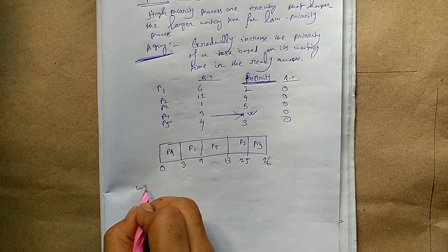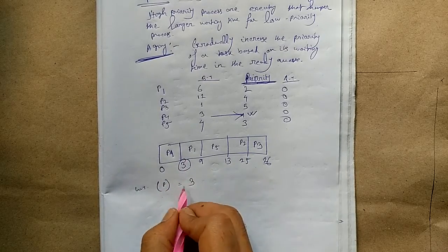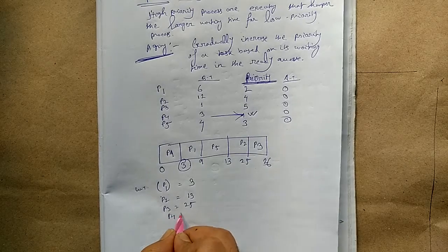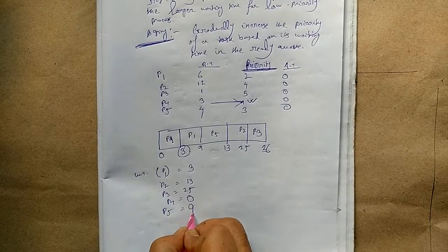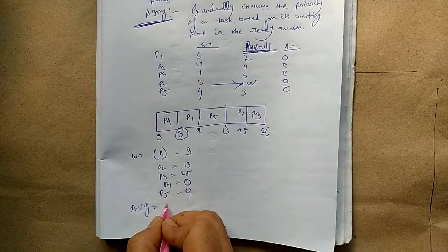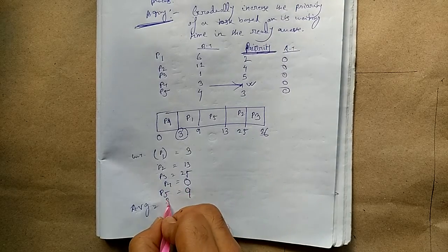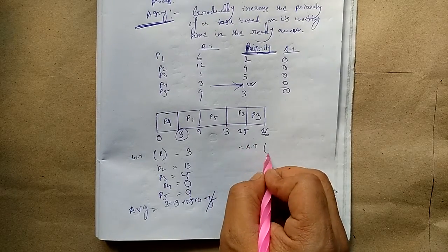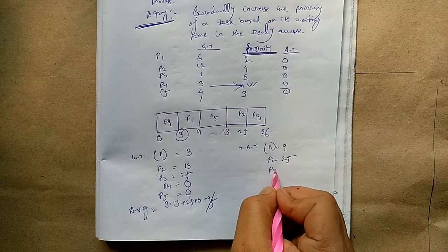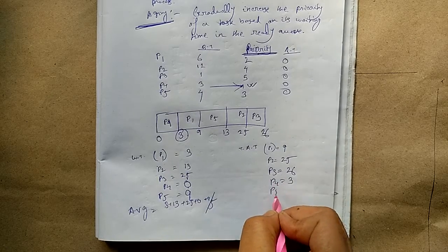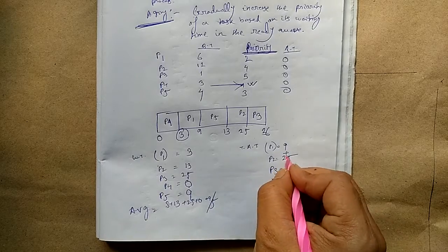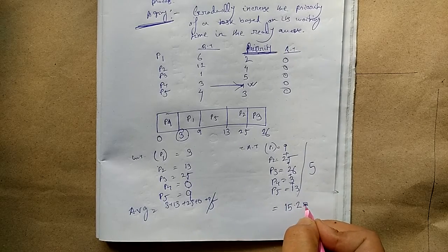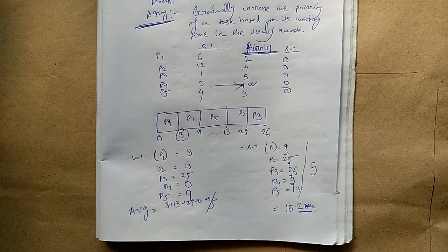The waiting time for process P1 is 3. Waiting time for process P2 is 13. Process P3 is 25. Process P4 is 0. Process P5 is 9. The average waiting time equals 3 plus 13 plus 25 plus 0 plus 9 divided by 5. The turnaround time for process P1 is 9, process P2 is 25, process P3 is 26, process P4 is 3, and process P5 is 13. The average turnaround time is all of these summed and divided by 5, which gives approximately 15.2 seconds.